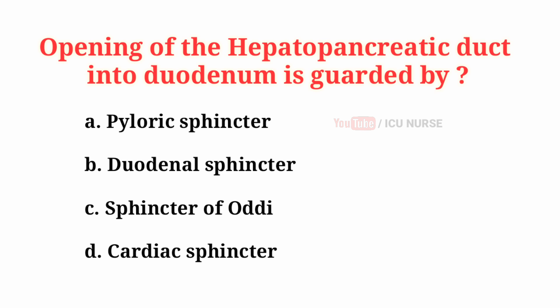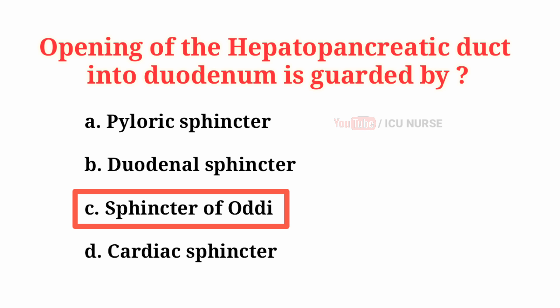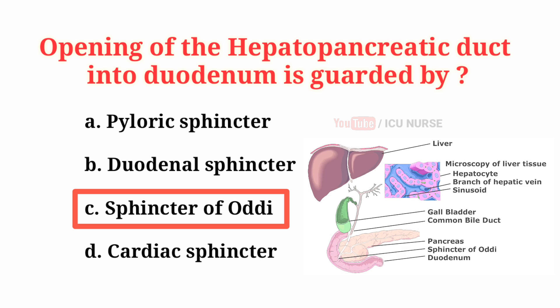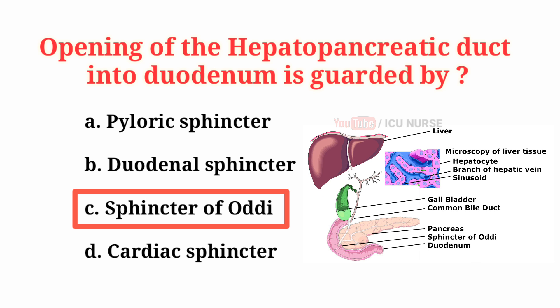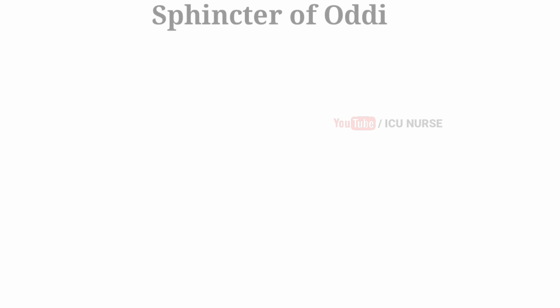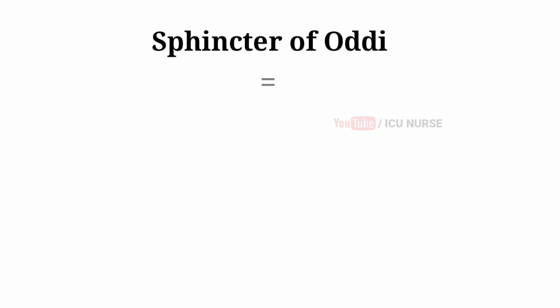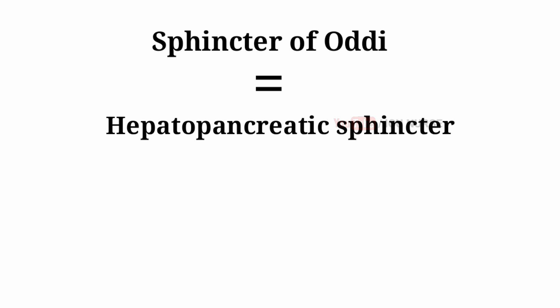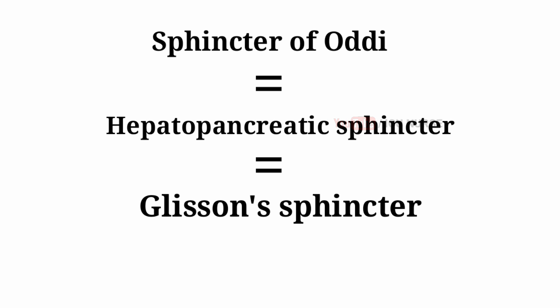Opening of the hepatopancreatic duct into the duodenum is guarded by — the correct answer is C: Sphincter of Oddi. The Sphincter of Oddi is also called the hepatopancreatic sphincter or Gleason sphincter.